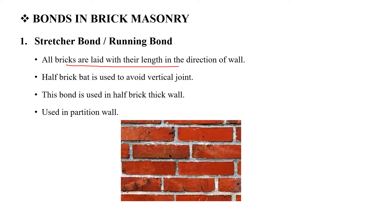The Stretcher bond uses vertical joints as a half brick. This bond is half a brick thick and is used as a partition wall.